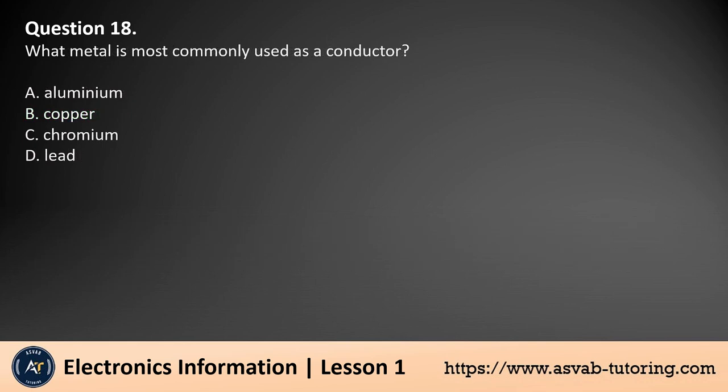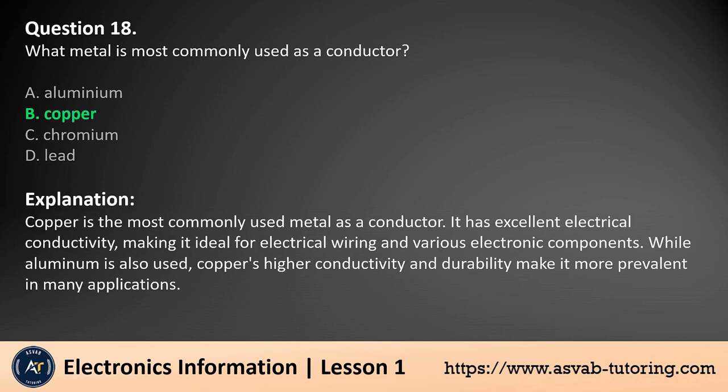Question 18. What metal is most commonly used as a conductor? a. Aluminium, b. Copper, c. Chromium, d. Lead. The answer is b. Copper is the most commonly used metal as a conductor. It has excellent electrical conductivity, making it ideal for electrical wiring in various electronic components. While aluminum is also used, copper's higher conductivity and durability make it more prevalent in many applications.